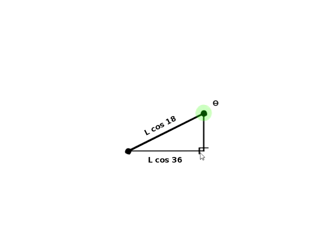So if we isolate this triangle, and recognize the information that we already know about it, this length is L cosine 36, this length is L cosine 18, we want to figure out what this angle here is.